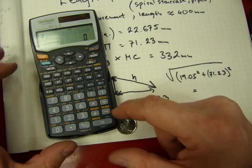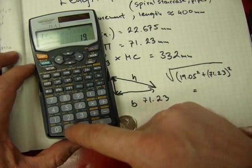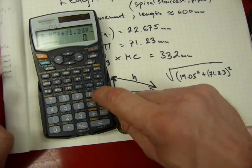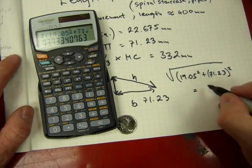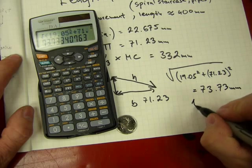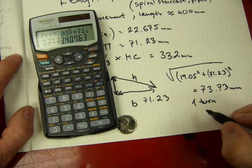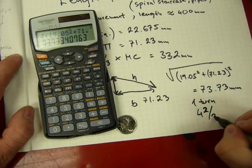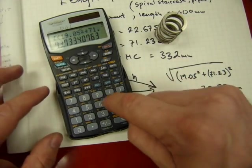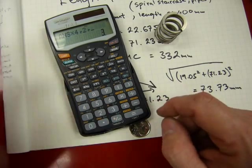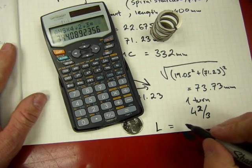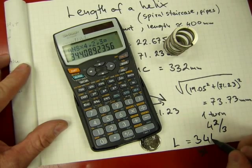Second function, bracket, 19.05 squared plus 71.23 squared, bracket, equals. I have here 73.73 millimeters for one turn. That's one turn. Now we know that there are four and two-thirds of wire turn in this helix, so I just have to multiply this number by four and two-thirds to arrive to a final length of 344.08 millimeters.